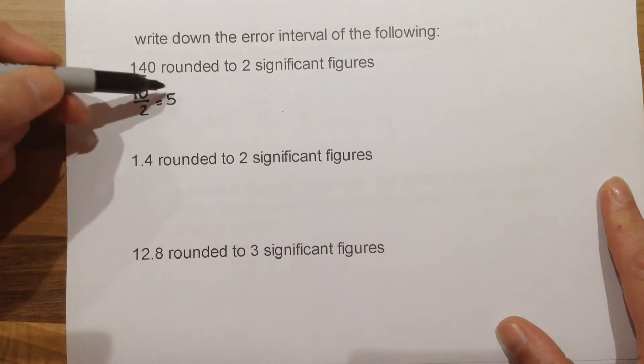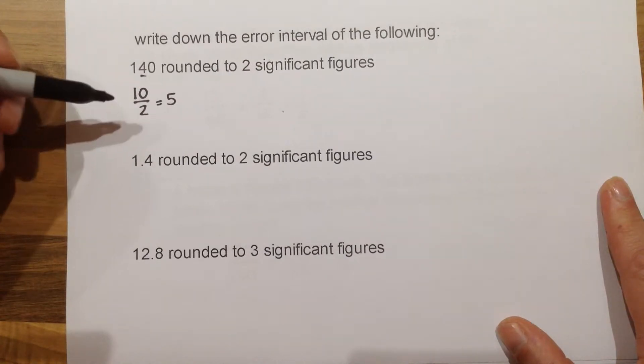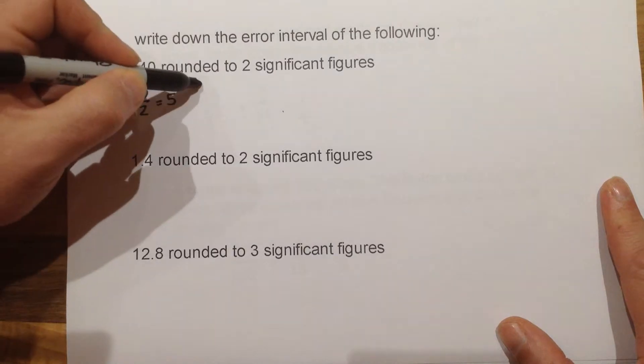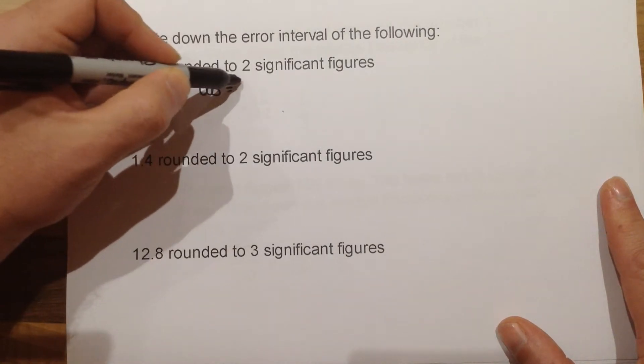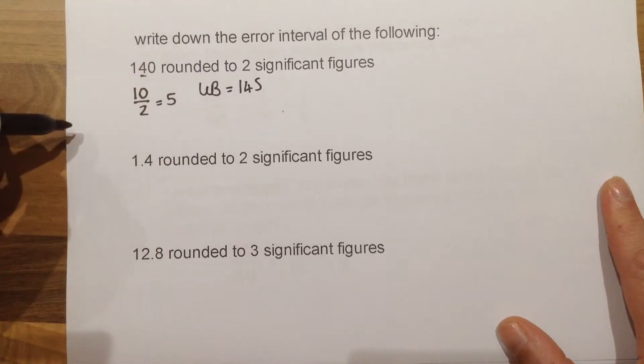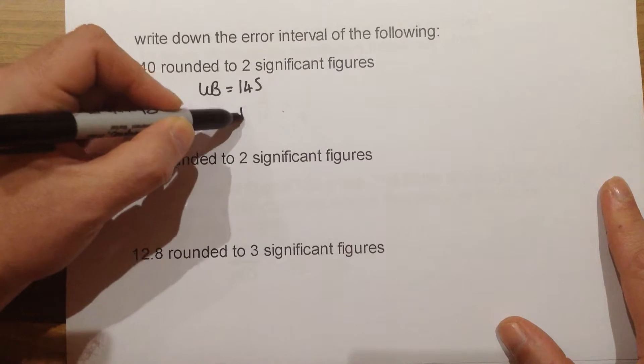And that is how much above and below this number we need to go in order to find out the upper and lower bound. So in this case, the upper bound is 5 more than 140. So 145. And 5 less than 140 would give us our lower bound of 135.